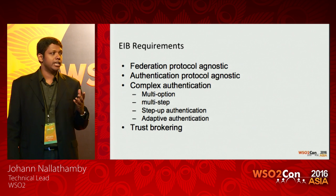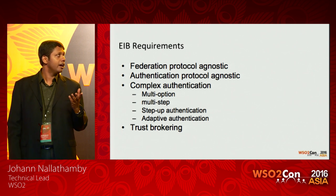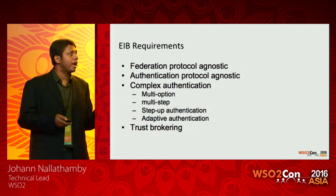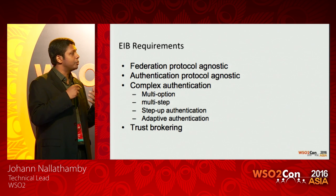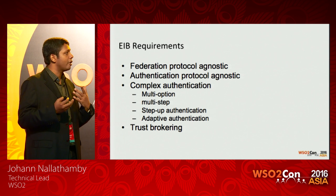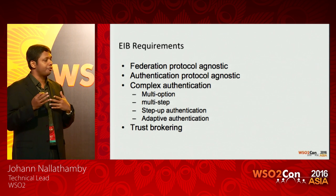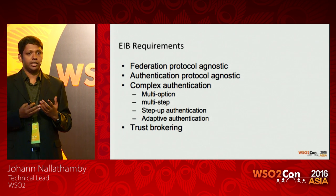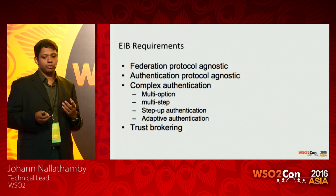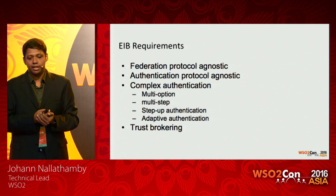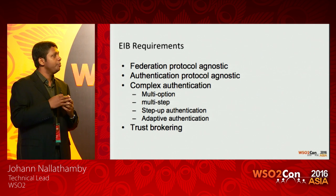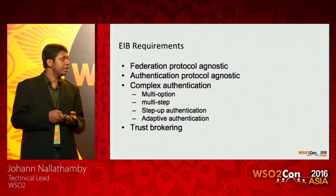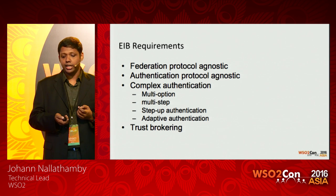Key EIB requirements include being federation protocol agnostic — the protocol an identity provider or service provider speaks should not be a concern. Authentication protocol agnostic: once you reach the identity server, how you authenticate should not matter to the service provider. Complex authentication requirements like adaptive and step-up authentication are also covered. These adaptive and step-up authentication features are still not present in IS 5.0.